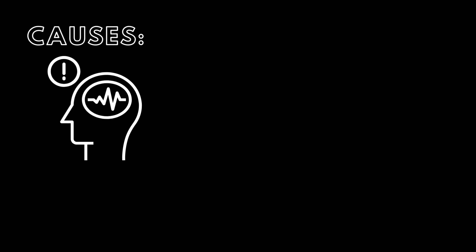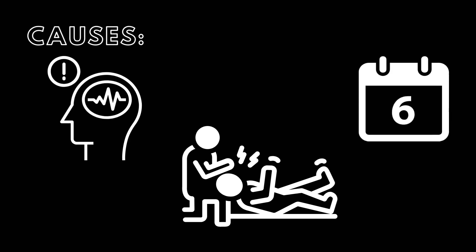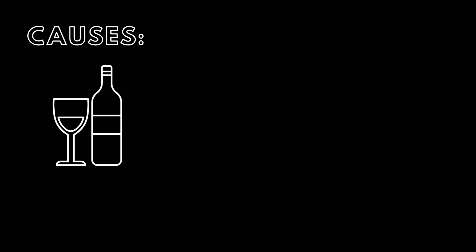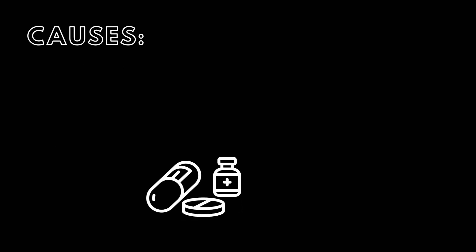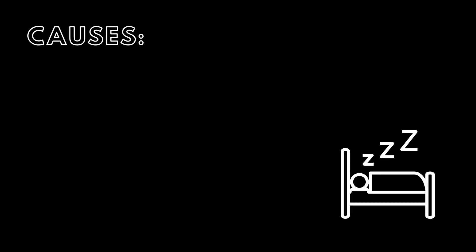Abnormal electrical activity in the brain causes epilepsy. Seizures without an identifiable cause increase the likelihood of further seizures within six months, and experiencing two seizures raises the risk of recurrent seizures throughout one's lifetime. Alcohol or drug use, failure to take prescribed medications, stress, and lack of sleep can all increase the chance for more frequent seizures.